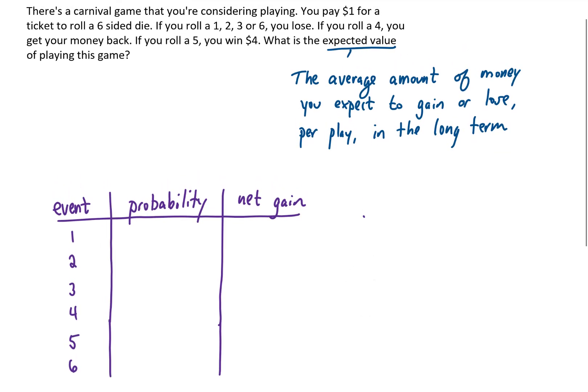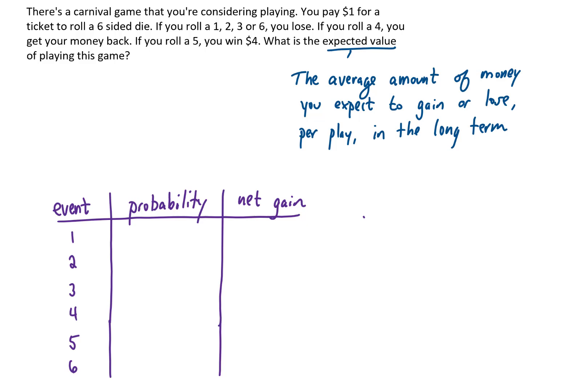The probability of each one of those events happening, if this die is fair, is 1 sixth. There are six possible outcomes, so the probability of any individual outcome is just going to be 1 out of 6.